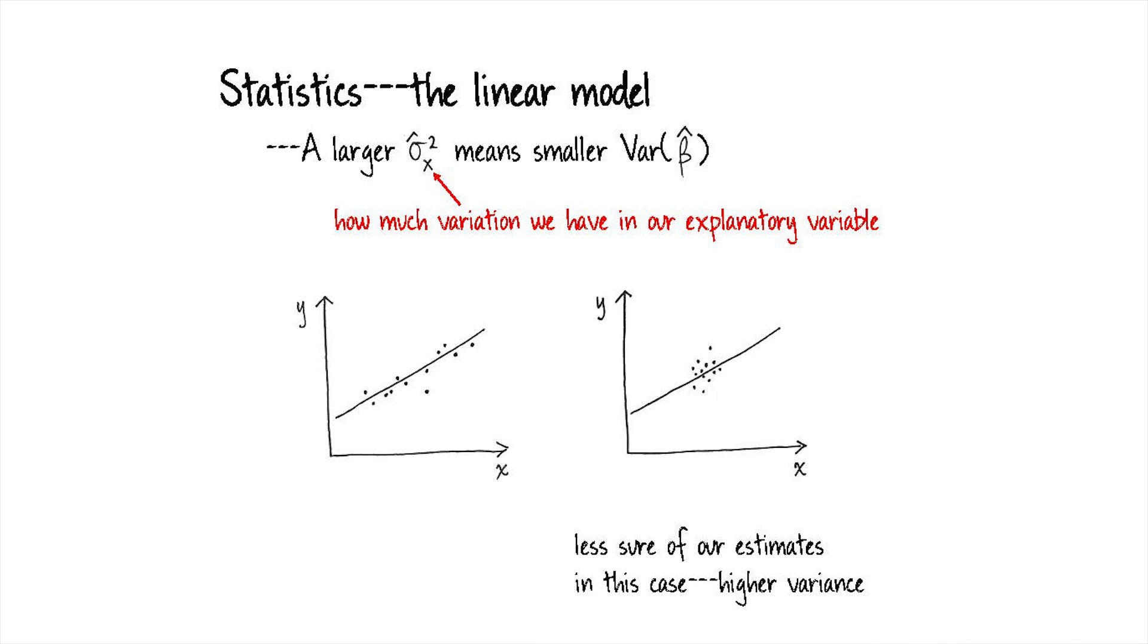Well, in the case where they're all smooshed together, remember in the limit we can't even estimate our linear regression coefficients, right? Remember the picture I showed you at the beginning where all the observations on x were on a single point?